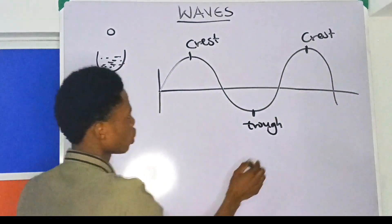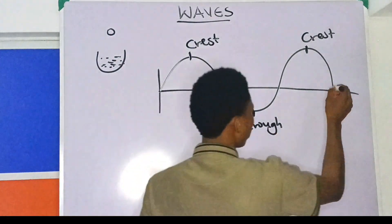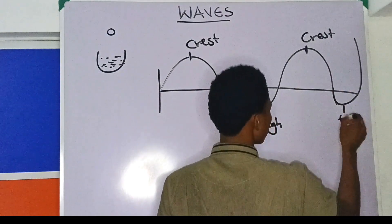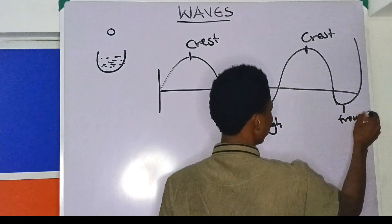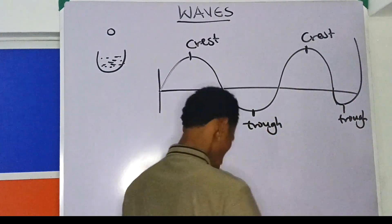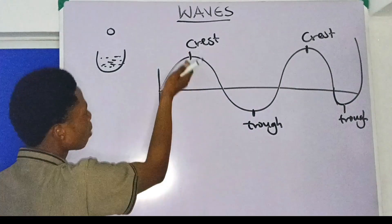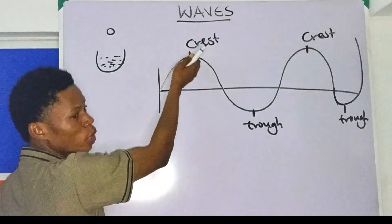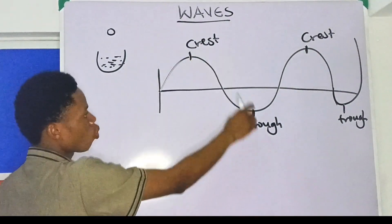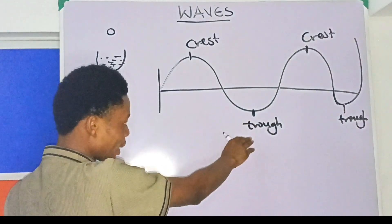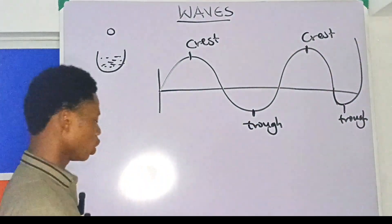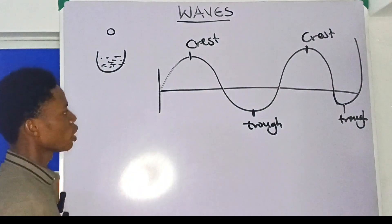So the maximum displacement upwards is the crest, while the maximum displacement downward is called the trough. Please take note of these two terms.